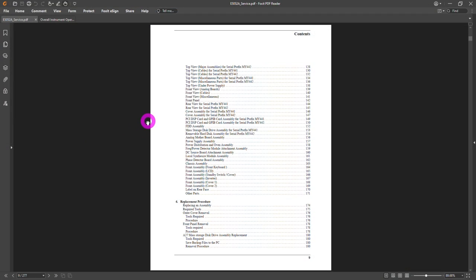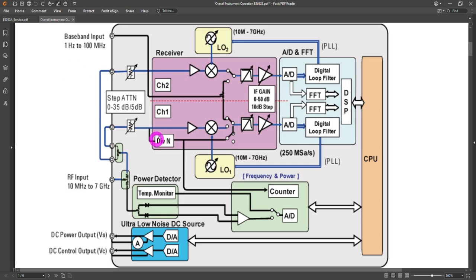So it turns out that there is a service manual for the E5052A, but unfortunately there are no block diagrams in it, and no real information about the internal architecture of the assemblies. I guess they really wanted to keep these things a secret. But there is an instrument block diagram for the E5052B, which is going to be good enough for us to work on. As I said, they're very similar.